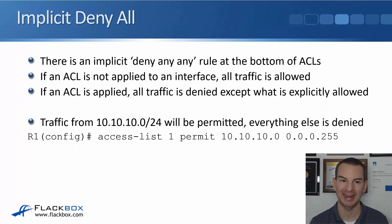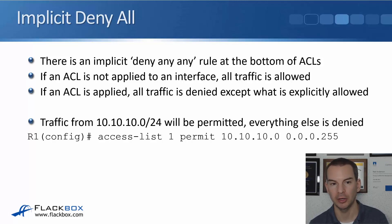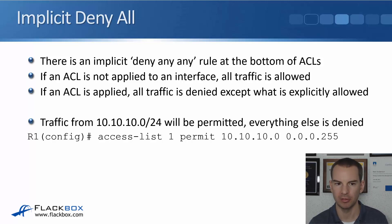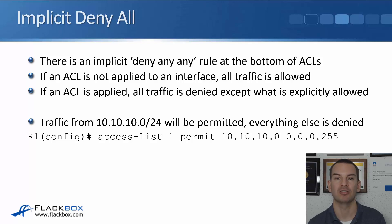Super important: there is an implicit deny any any rule at the bottom of all ACLs. If no ACL is applied to an interface, all traffic is allowed. If an ACL is applied, all traffic is denied except what is explicitly permitted — because of that implicit deny any any. For example, 'access-list 1 permit 10.10.10.0 0.0.0.255' will permit traffic from that subnet, but everything else is denied by the implicit deny all at the bottom.